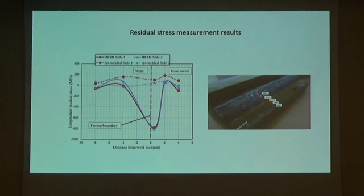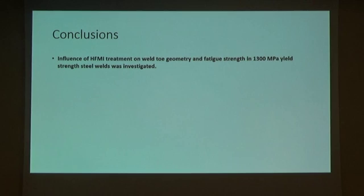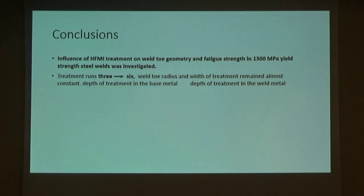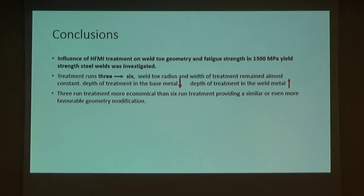In conclusion, we studied the influence of HFMI treatment on weld toe geometry and fatigue strength in 1300 megapascal yield strength steel. When we increased the number of treatment runs from 3 to 6, weld toe radius and width of treatment remained almost constant. However, there was a decrease in depth of treatment in the base metal and an increase in depth of treatment in the weld metal. Therefore, 3-run treatment seems to be a more economical option than 6-run treatment.